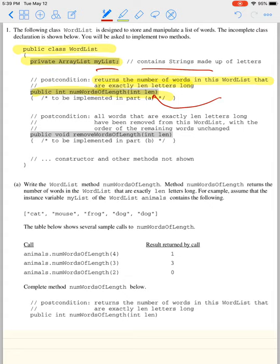For example, if we have myList of the WordList animals: cat, mouse, frog, dog, dog. And we have the table below. If the length was four, only one of them which is frog.